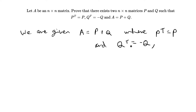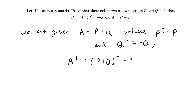This is asking us to prove a well-known property: that all square matrices can be decomposed into the sum of a symmetric matrix and a skew-symmetric matrix. So how are we going to prove this? We're going to take the transpose of A, which equals the transpose of P plus Q. Distributing the transpose, that's equal to Pᵀ plus Qᵀ.